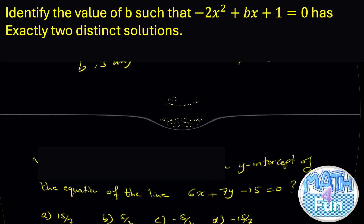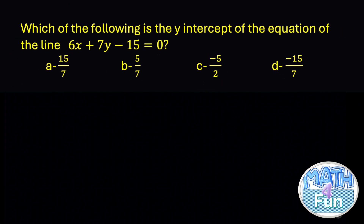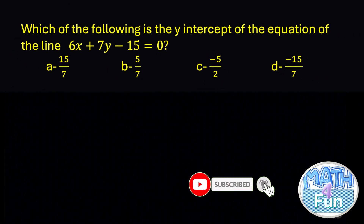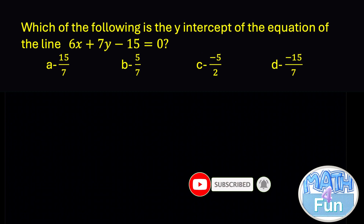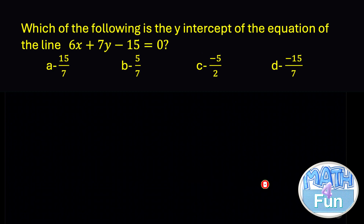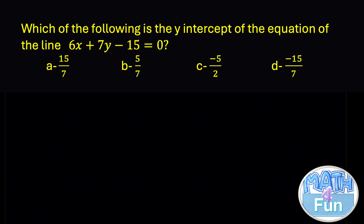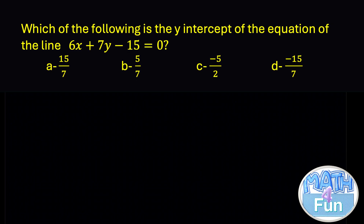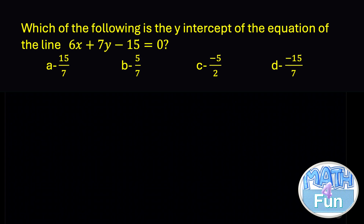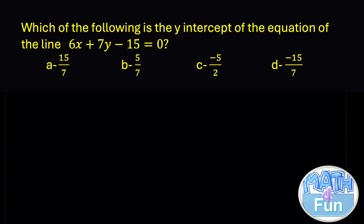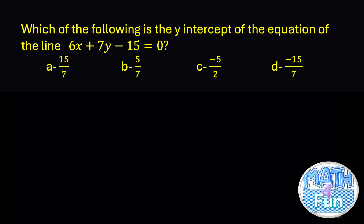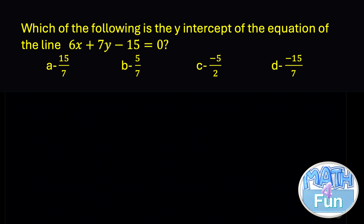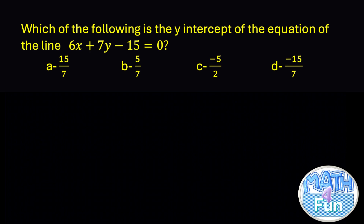Another example: which of the following is the y-intercept of the line 6x + 7y - 15 = 0? The choices are 15/7, 5/2, -5/2, or -15/7. To find the y-intercept, recall that it occurs when x = 0, because that's the intersection between the line and the y-axis.